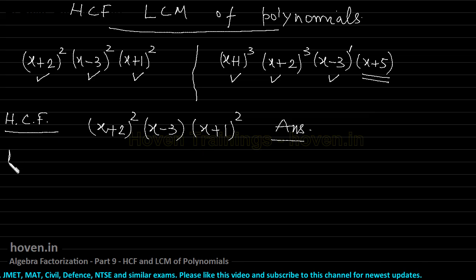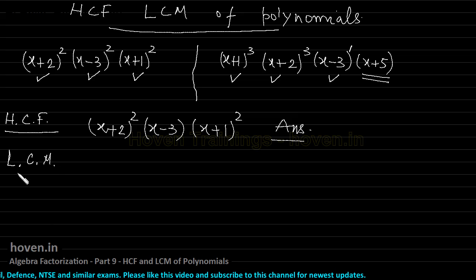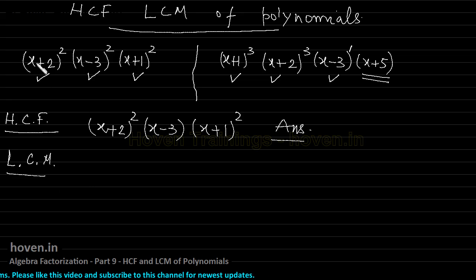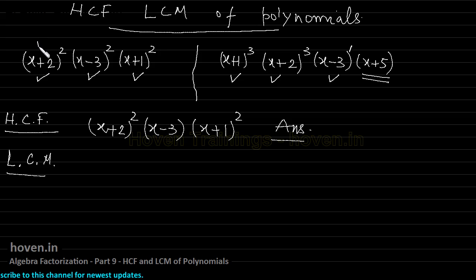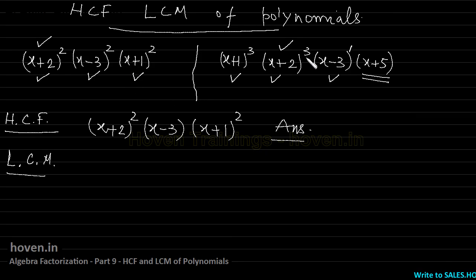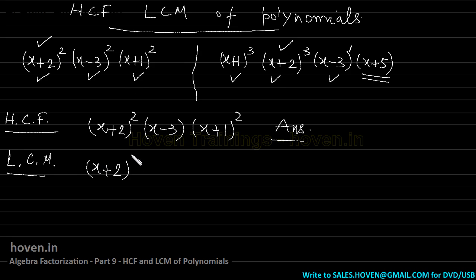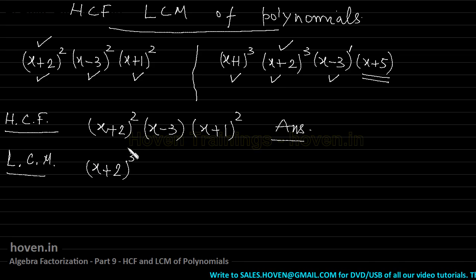Now let us see how to find the LCM of the same polynomials. To find the LCM, we follow the same approach of scanning factors one by one. Start with (x+2) — it is here and on the right side also. Tick mark. But this time you pick the higher degree. The higher of 3 and 2 is 3, so we write (x+2)³. In HCF you pick the lower degree; in LCM you pick the higher degree.